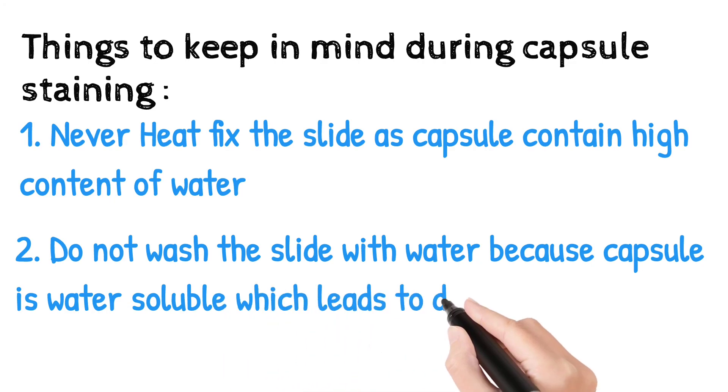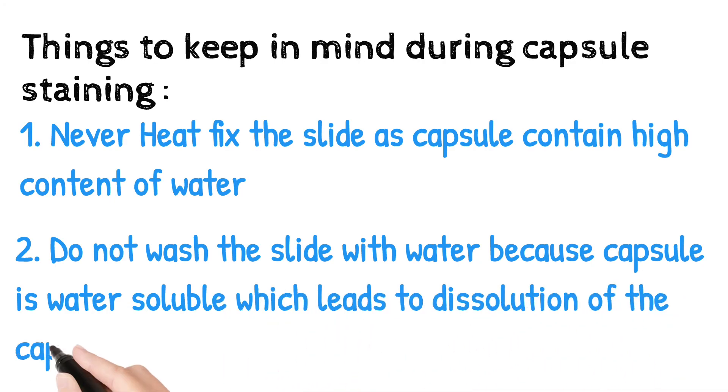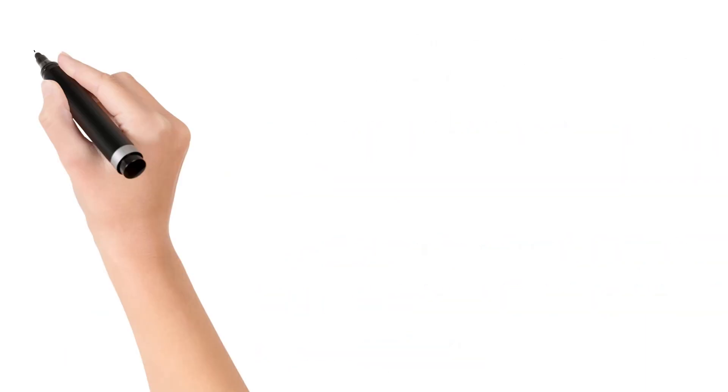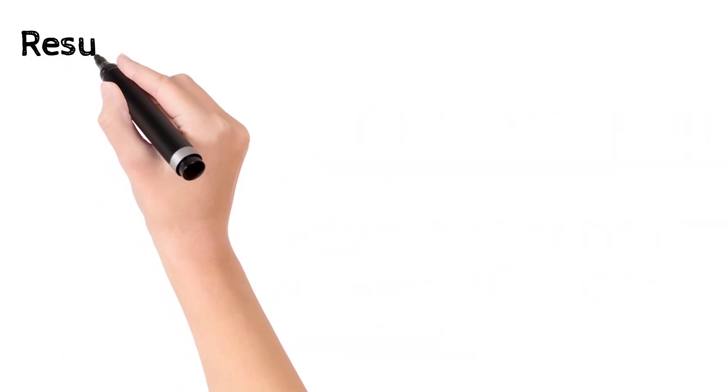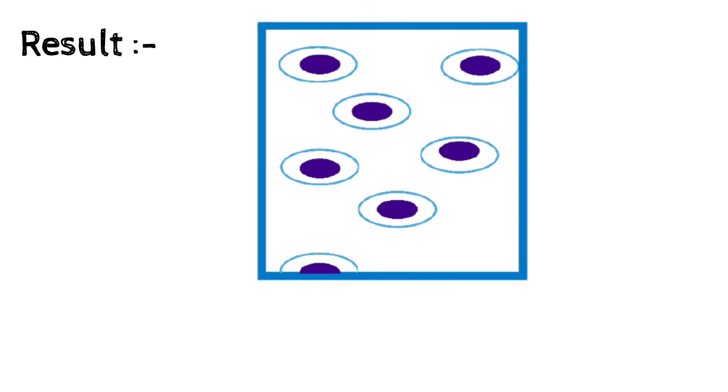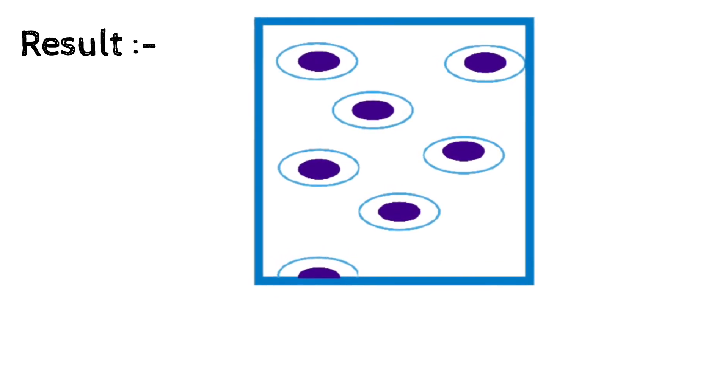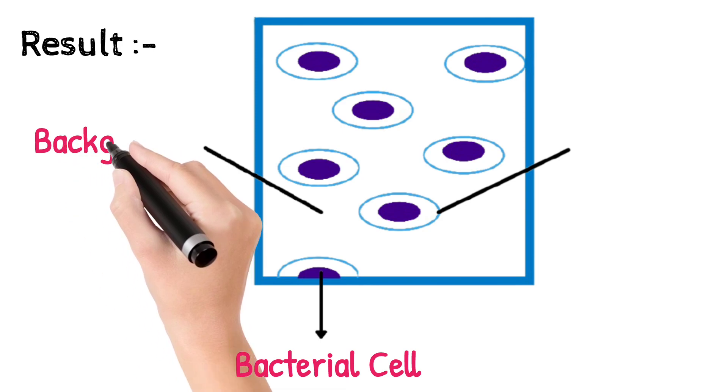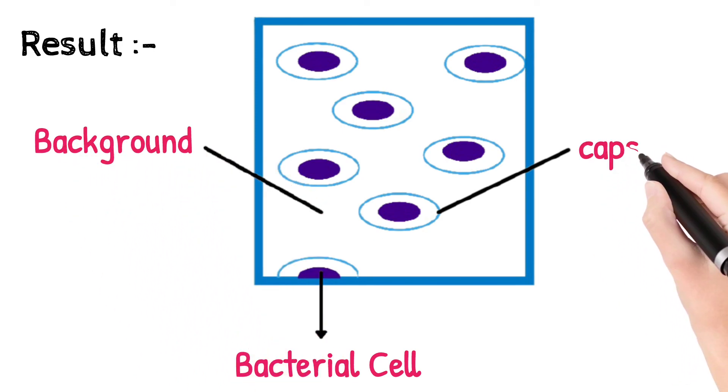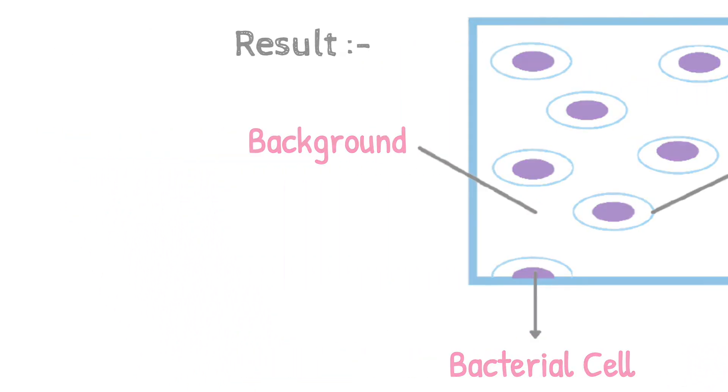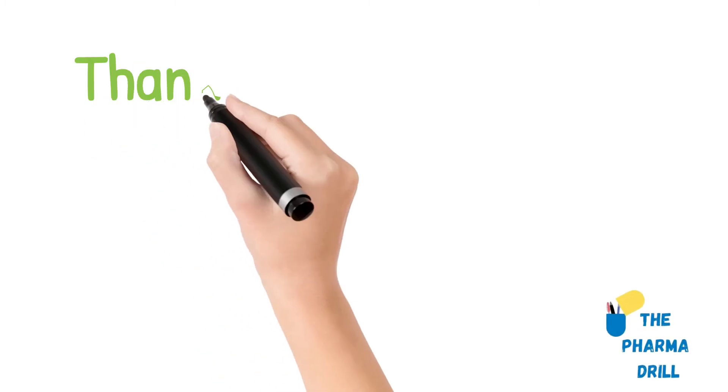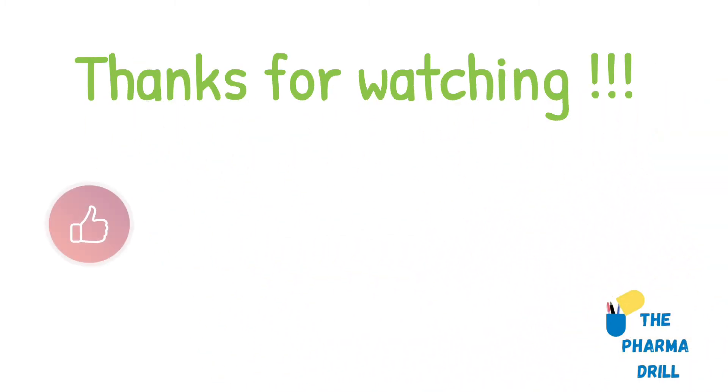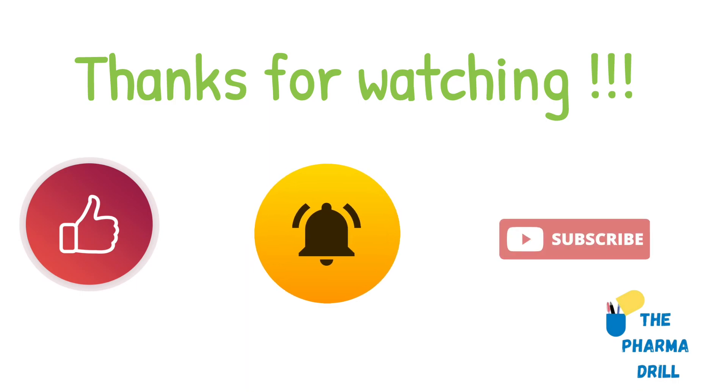At the end of the staining technique, we see the result. Three things are visible: First, bacterial cells appear dark violet in color. Second, the background is brighter or colorless. Third, the capsule appears faint blue in color. Thanks for watching! If you like the video, hit the like button, press the bell icon, and subscribe for more.